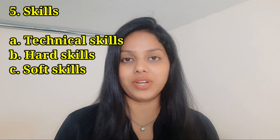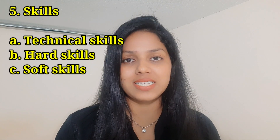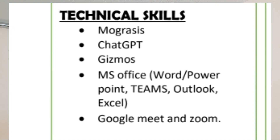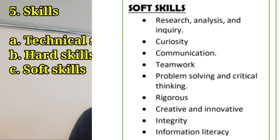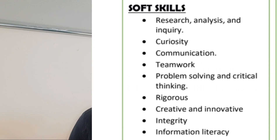The next section is the skills section, where you can include three different sub-sections: technical skills, soft skills, and hard skills. For technical skills, I have included Mograsis, ChatGPT, Gizmos, MS Office (Word, PowerPoint, Teams, Outlook, Excel), Google Meet, and Zoom. For hard skills, you can include classroom and behavior management, individualized education plans, student-centered and differentiated instruction, curriculum development, and lesson planning. In soft skills, you can write research, analysis, inquiry, curiosity, communication, teamwork, problem solving, critical thinking, creativity, innovation, integrity, and information literacy.